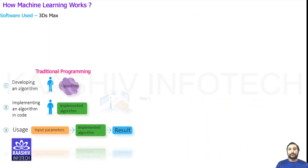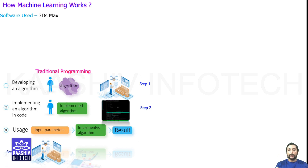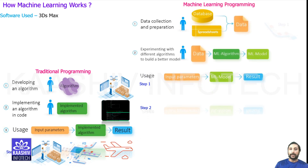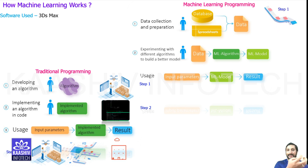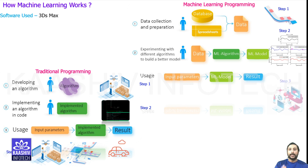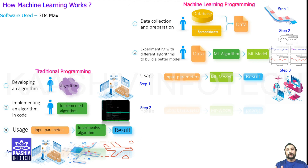In traditional programming there is an algorithm: you take an input, implement the algorithm, and get an output. This is the basis of traditional programming in languages like C, C++, Java, and .NET. Machine learning is very different — here you collect data, identify what machine learning algorithms to implement, create a model, feed the input to the model, and get an output. That's how machine learning works.